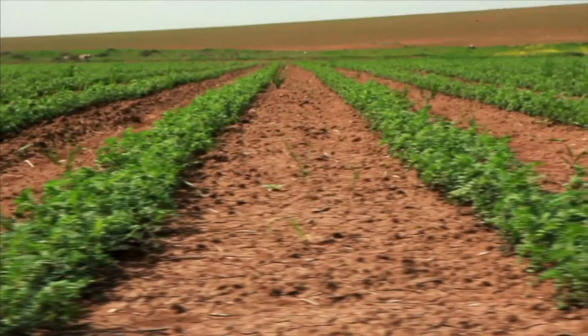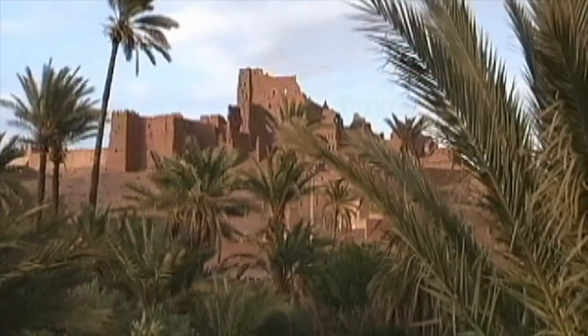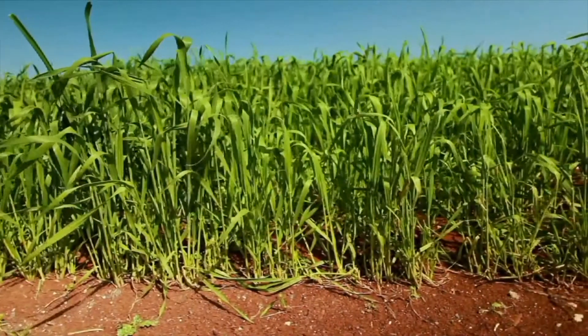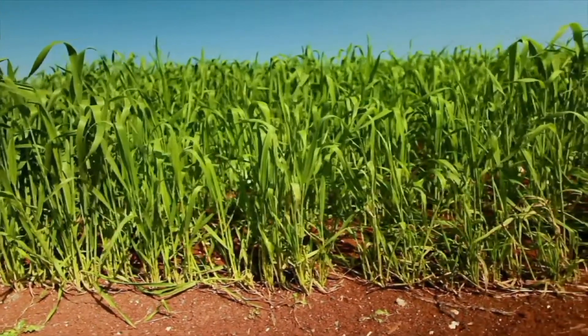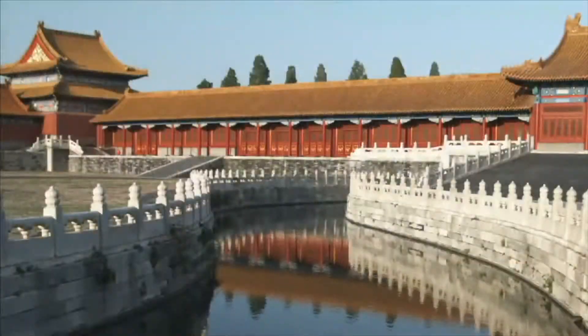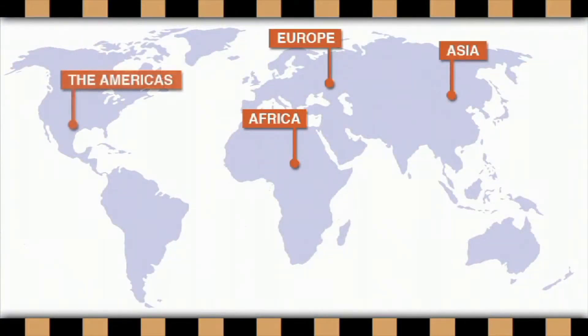It is believed that farming began in the Middle East in the area of Turkey about 10–12,000 years ago. The development of agriculture permitted unprecedented growth of human population and the emergence of towns and cities in Africa, Europe, Asia, and the Americas.